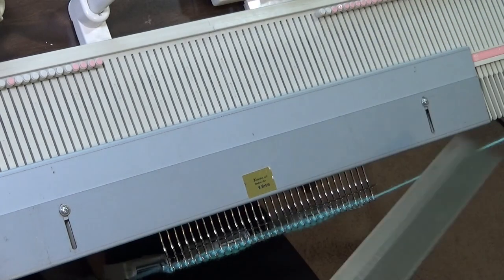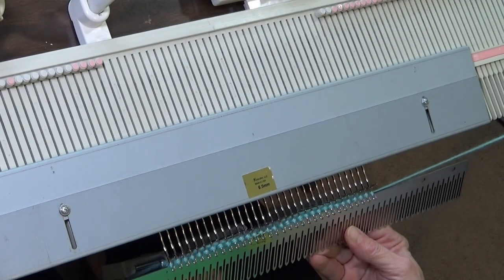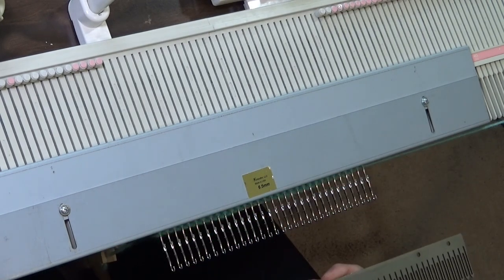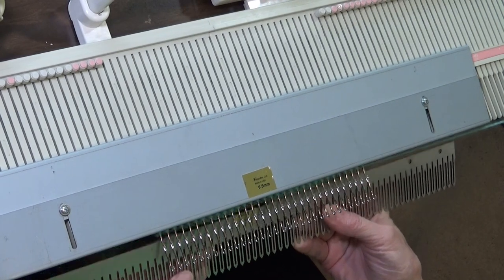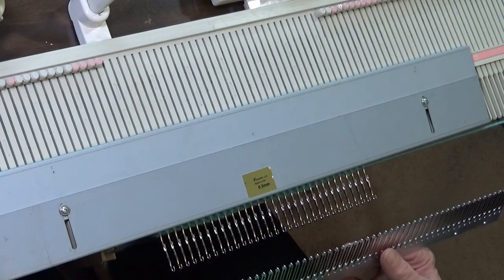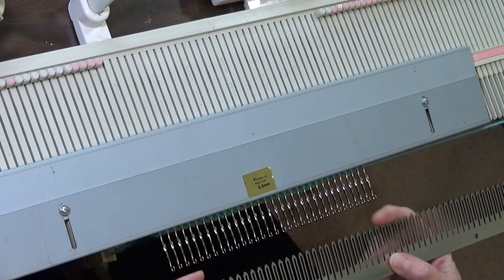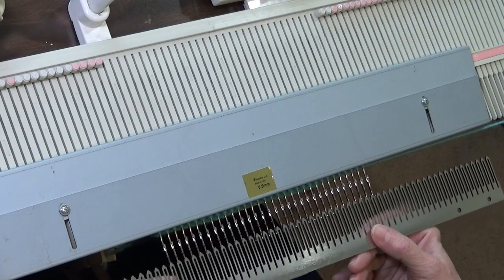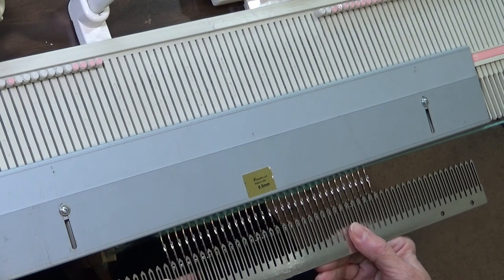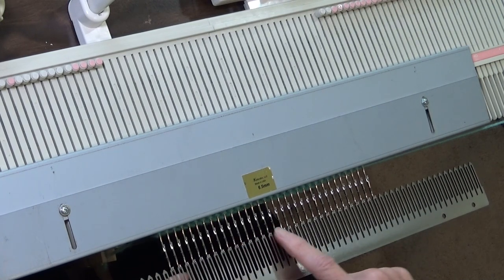Then I take my garter bar. Push all the stitches on the needles back to the needle bed. That does two things. Once it gets it out of the way, but it also opens all the latches. Then all I have to do is flip my garter bar around so that the little points are pointing at the machine. And there is a slot for each needle because this is spaced for this machine. I am going to place them on the hooks.